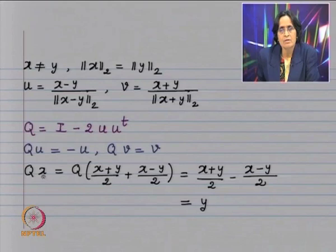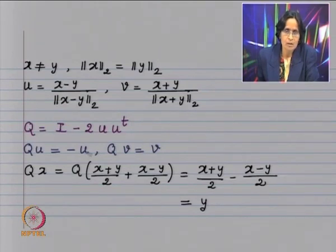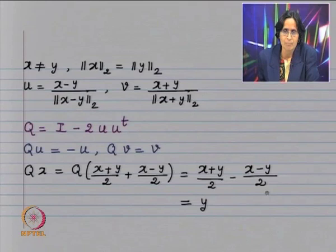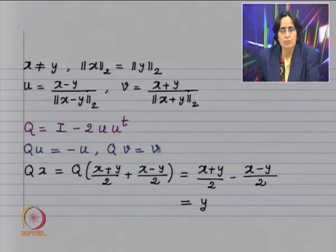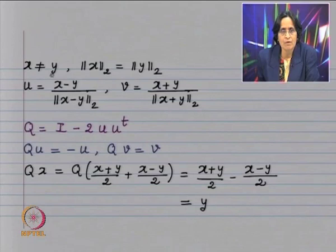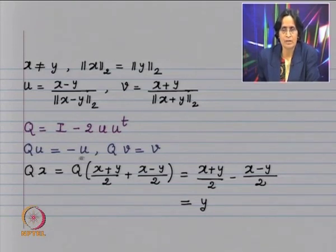If we define u and v in this fashion and Q equals identity minus 2 u u-transpose, then Q u equals minus u and Q v equals v. Now, vector x can be written as (x plus y)/2 plus (x minus y)/2. Since Q u equals minus u, Q of (x minus y)/2 equals minus (x minus y)/2, and since Q v equals v, Q of (x plus y)/2 equals (x plus y)/2. Thus we get Q x equals y. We have shown that if x and y are vectors with the same Euclidean norm and x ≠ y, then we can find Q such that Q x equals y.